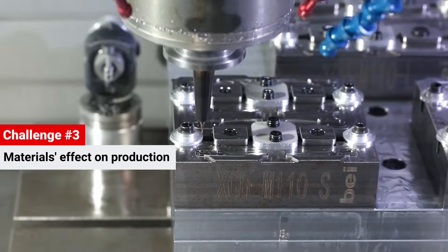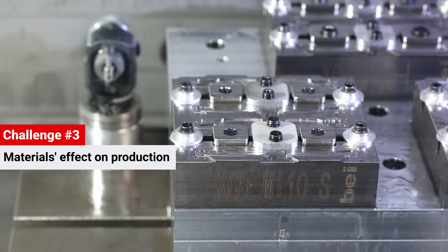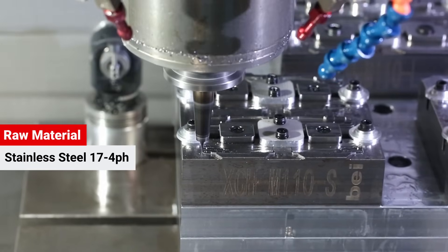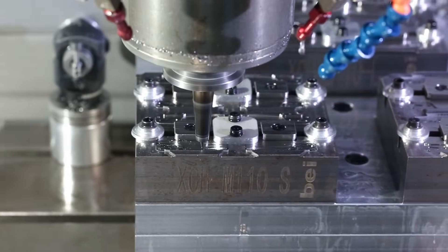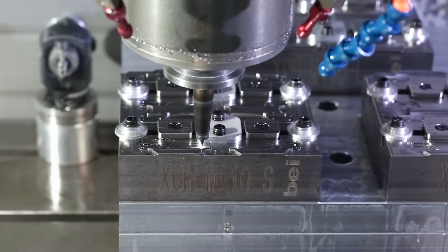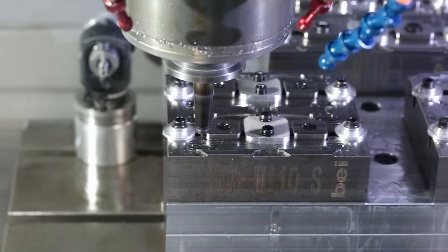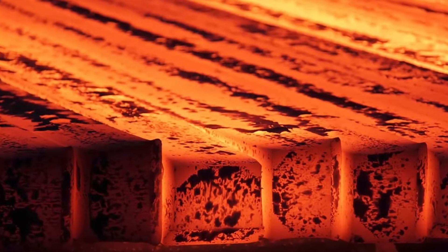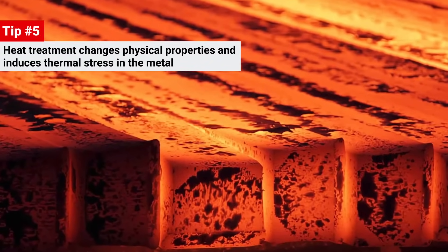Now, let's consider how the type of material also affected production. The raw material specified here is 17-4 pH, a well-known variety of stainless steel. Normally, we can machine 17-4 just fine, if it hasn't already been heat-treated. But our client did want us to heat-treat the 17-4, and heat-treatment changes physical properties a lot.